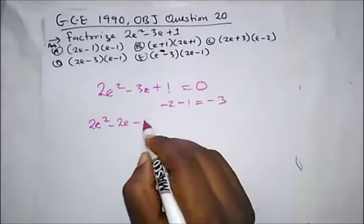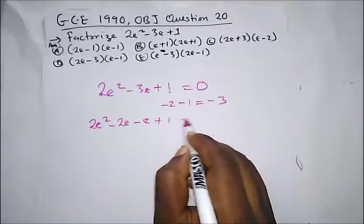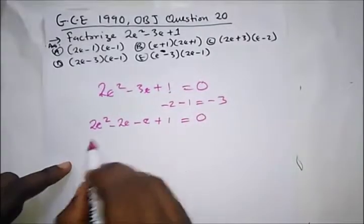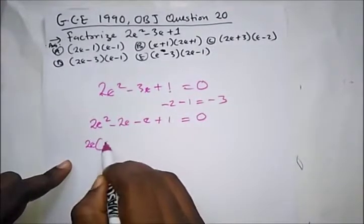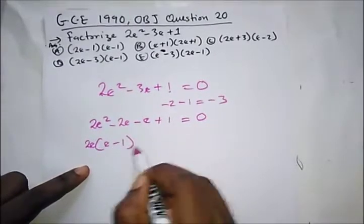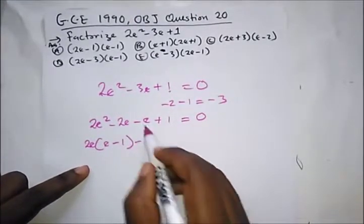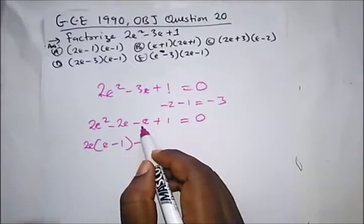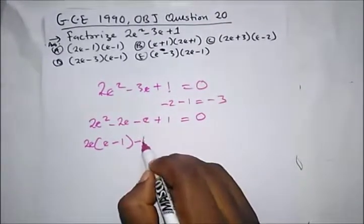Minus 2e minus e plus 1 equal to 0. What's common here? 2e bracket. So when we bring it out, we have we're left with e minus 1 bracket.